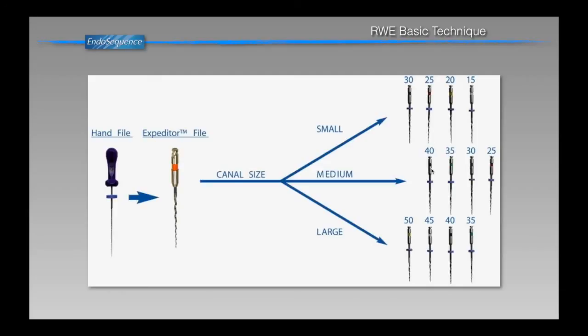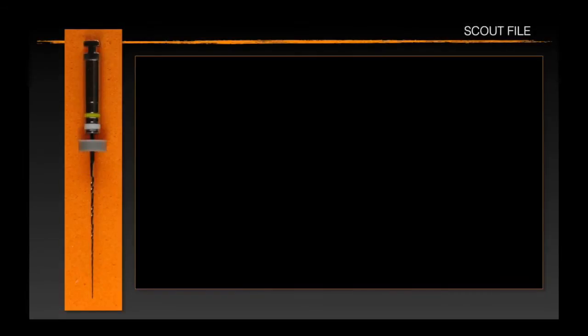Sometimes you have a hard time progressing as you crown down 40 to 35 to 30 to 25. It's highly advisable to keep patency to length. Make sure you're not blocking yourself. That has been traditionally done with this guy here, your working length file.